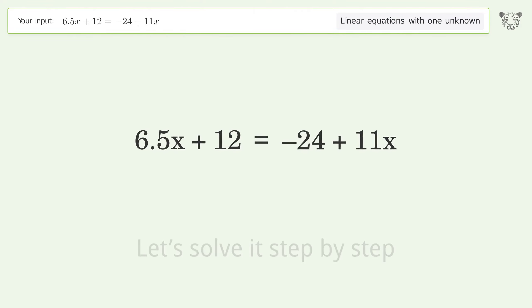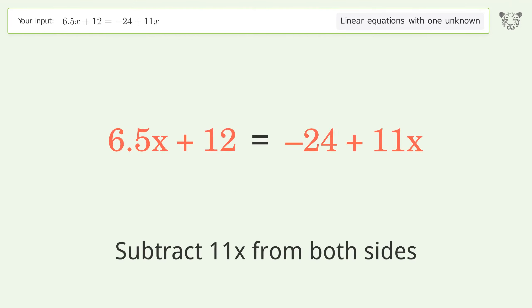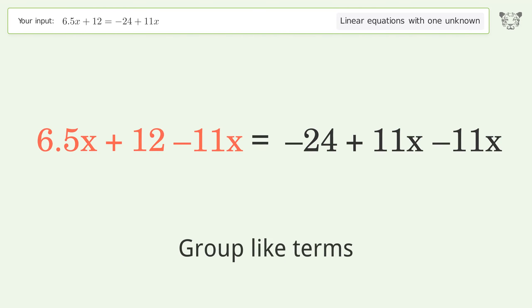Let's solve it step by step. Group all x terms on the left side of the equation. Subtract 11x from both sides. Group like terms.